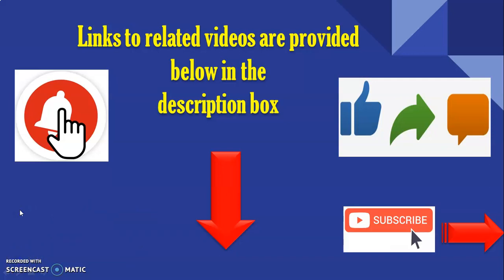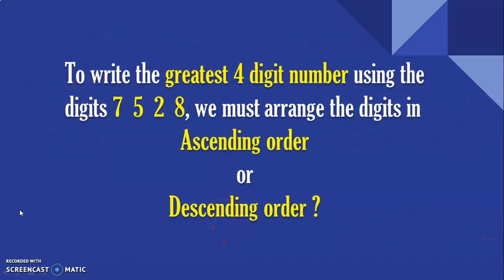Before closing this session, let us take one concept-based question. To write the greatest four-digit number using the digits 7, 5, 2, 8, we must arrange the digits in ascending order or descending order — what do you think? Please leave your answers in the comment section. Thank you for watching my channel. See you in the next session.